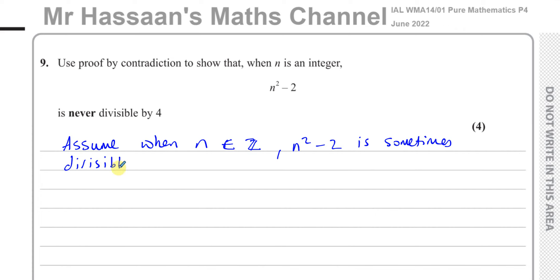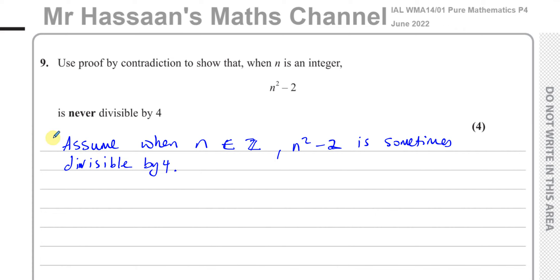It says never divisible by 4, so you can say it's sometimes divisible by 4. If we can show that this causes some sort of mathematical nonsensical statement — a contradiction — then we can say what we've stated here is a contradiction, and therefore the original statement must be true. The first step is to negate the statement; that gets us one mark.